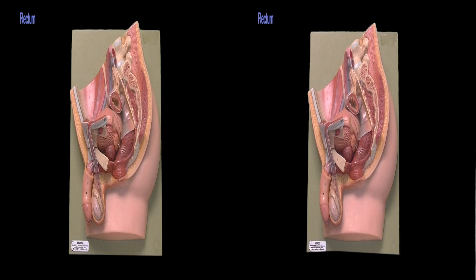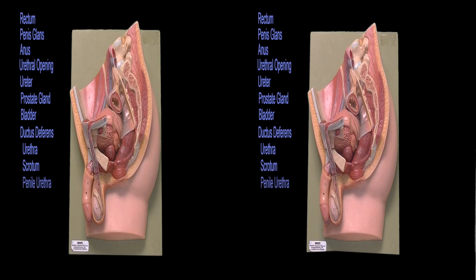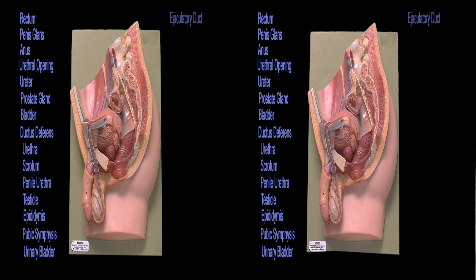Rectum, penis glands, anus, urethral opening, ureter, prostate gland, bladder, ductus deferens, urethra, scrotum, penile urethra, testicle, epididymis, pubic symphysis, urinary bladder, ejaculatory ducts, bulbourethral gland.